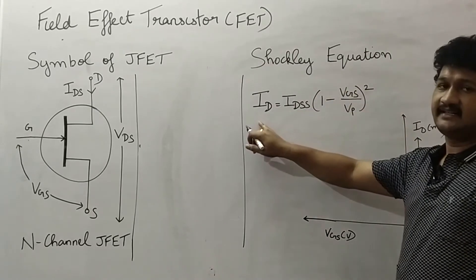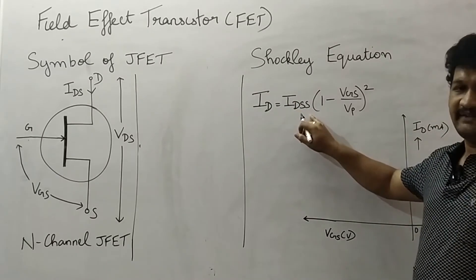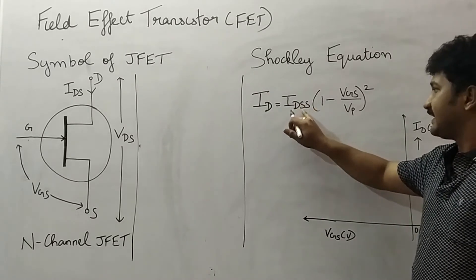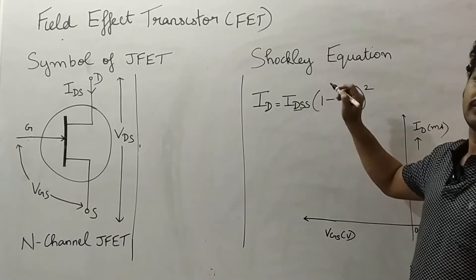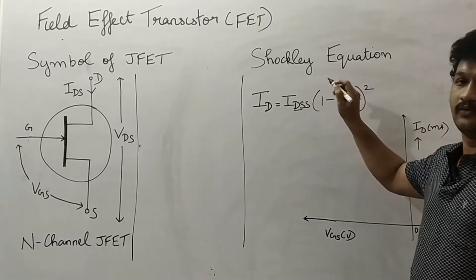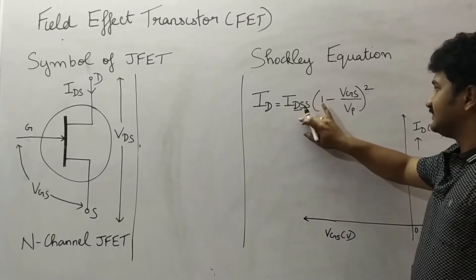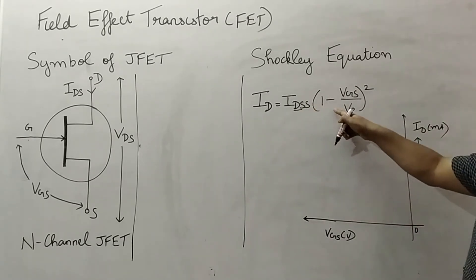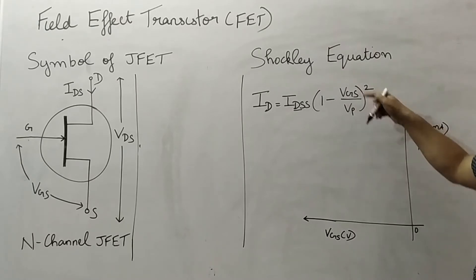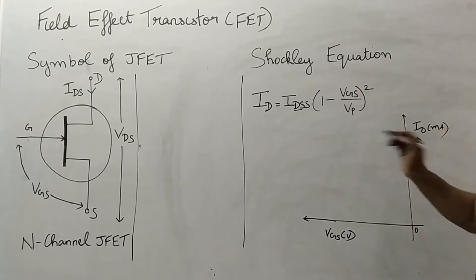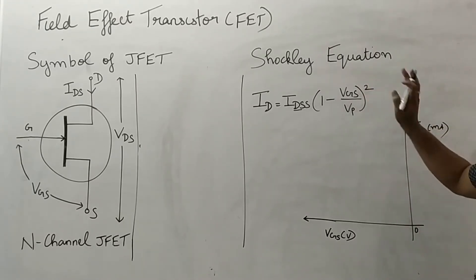Here, Id is the drain current. Idss, as discussed in previous videos, is the drain-to-source current when the gate-to-source voltage is zero, so we can expect maximum drain current in this case. Vgs is the gate-to-source voltage and Vp is the pinch-off voltage. This is the Shockley equation for JFET.